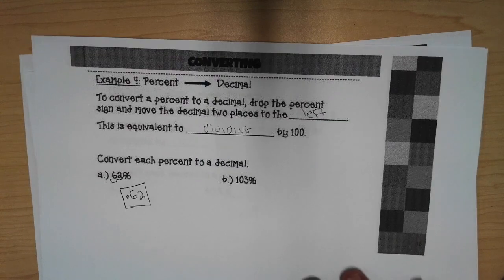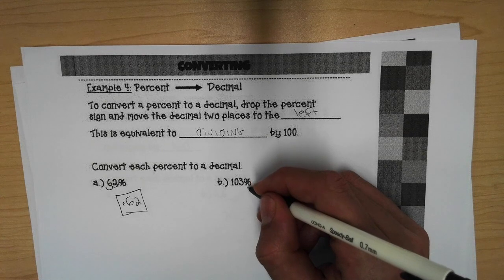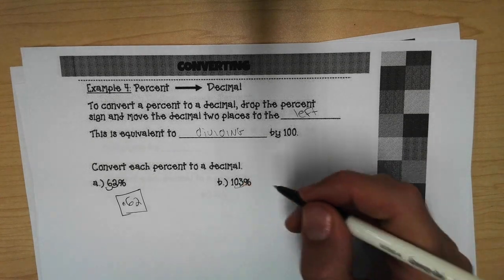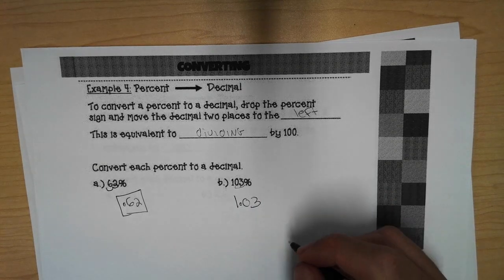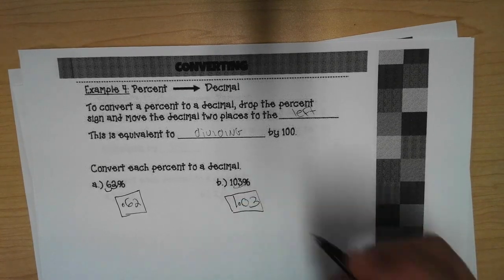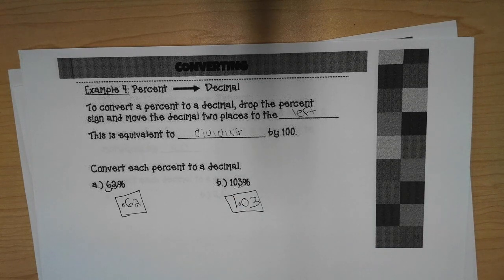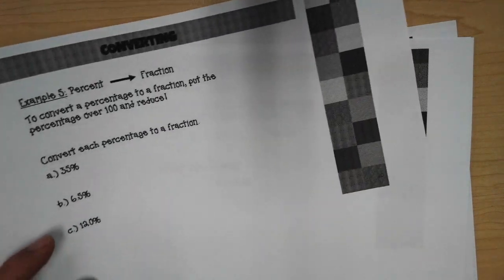And in this case, we had 103 percent. So we want to move this two places to the left, from the right, and we get one and three hundredths. So 103 percent is equivalent to one and three hundredths. Let's keep going.